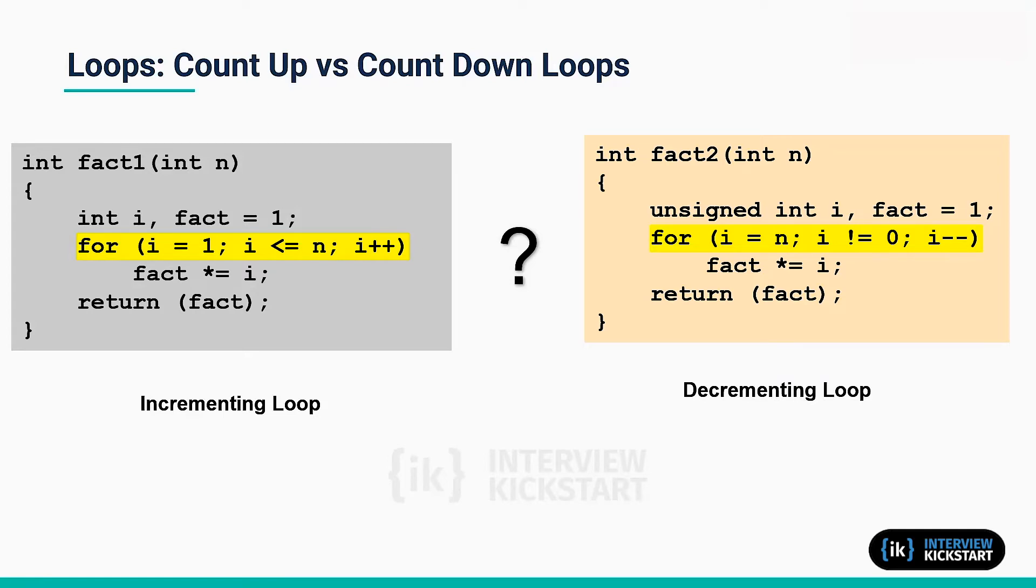For decrementing loop we can see that the subtract operation on the iterator i will be followed by a conditional branch on comparison with zero or not zero. So if it is branch on not zero, loop back. So there is no actual comparison.